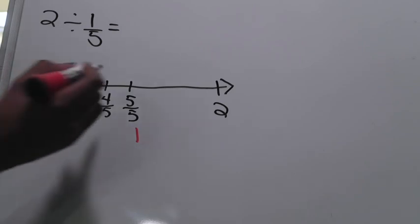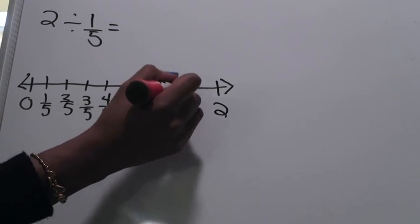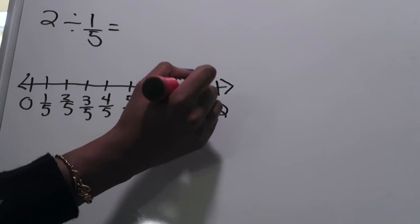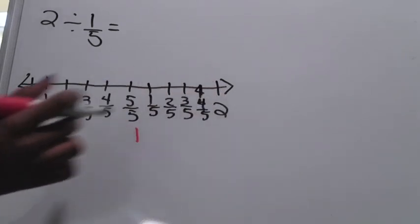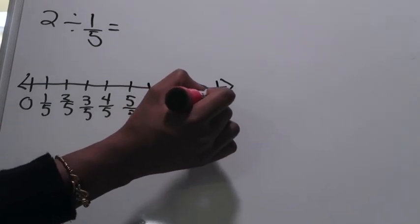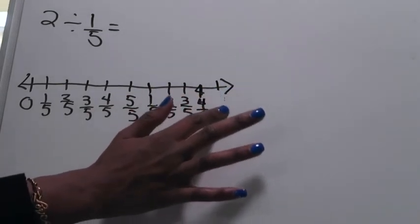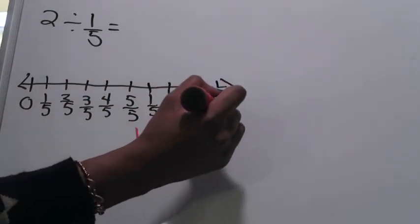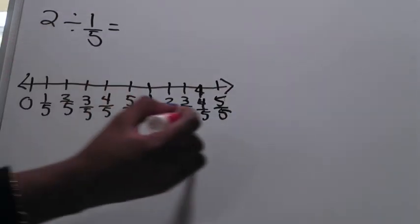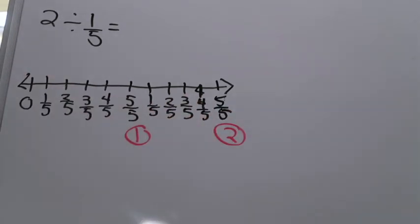I need to get all the way to two wholes, so I start the same process over again: one-fifth, two-fifths, three-fifths, four-fifths, and that's two — meaning that last mark was five-fifths, which is another whole. That gives me in total two wholes, which is what I needed. My number line is now broken up and divided into fifths.